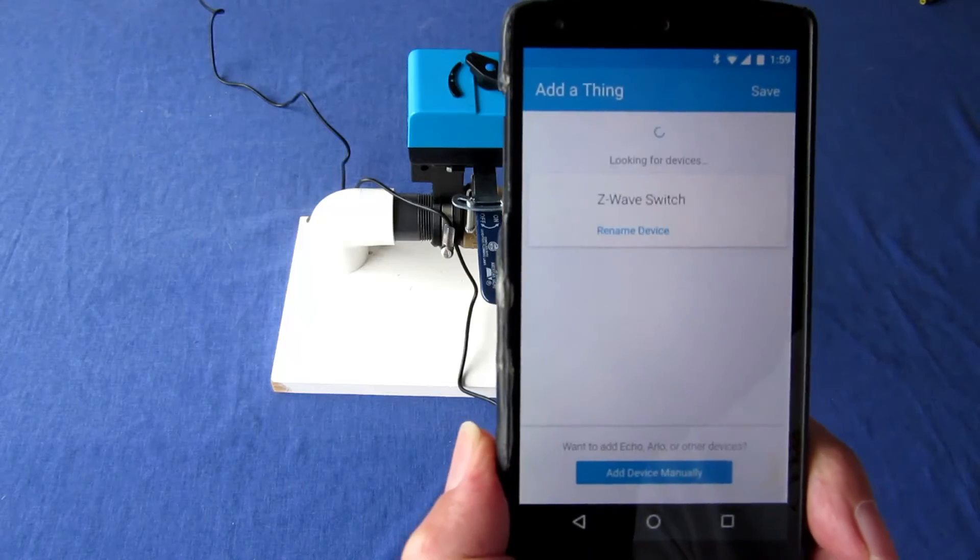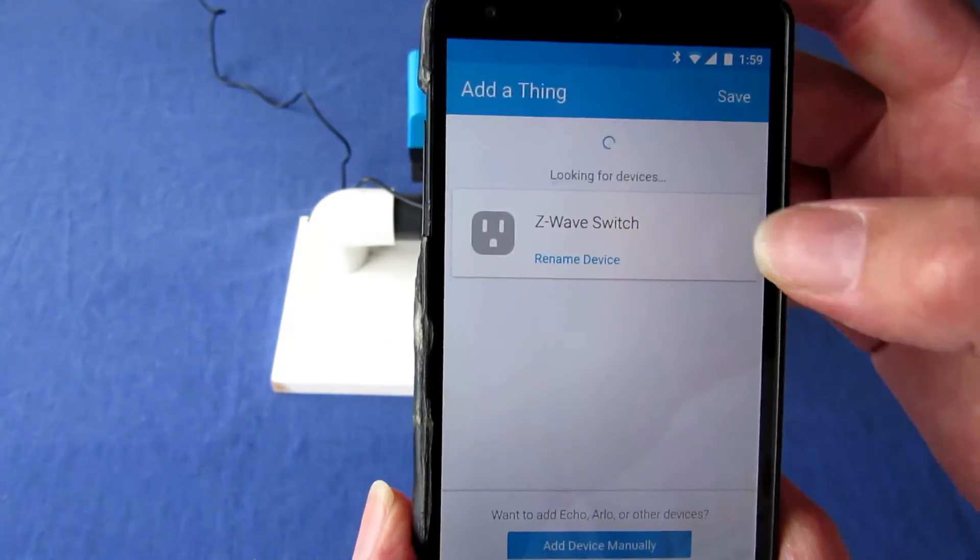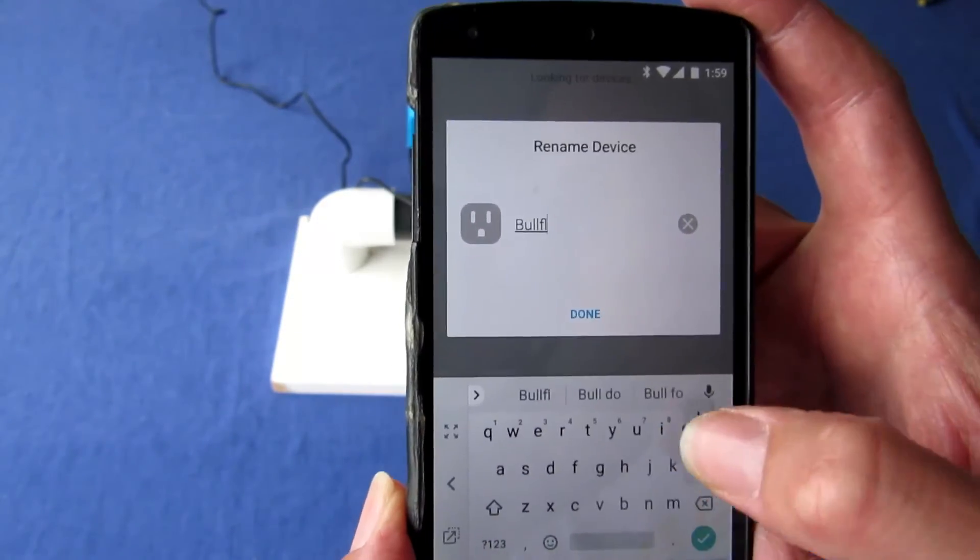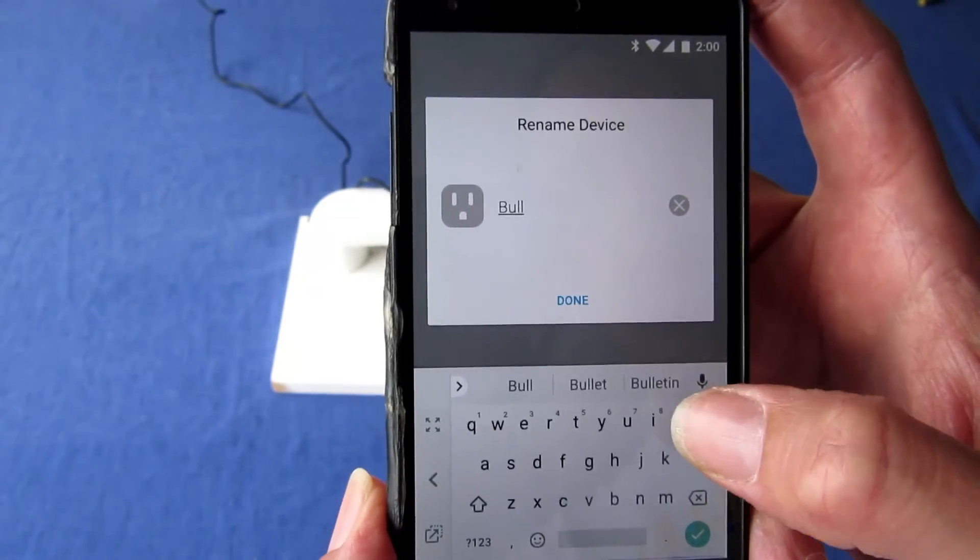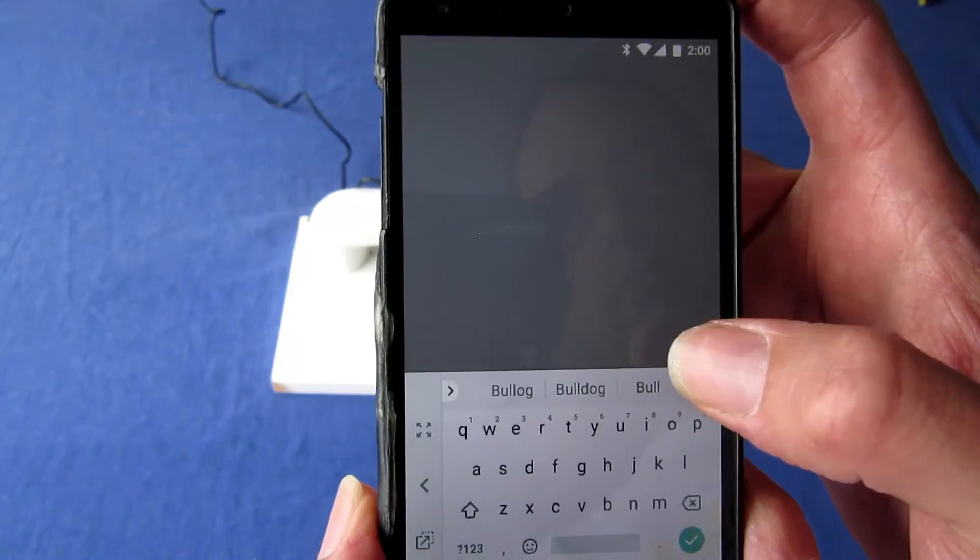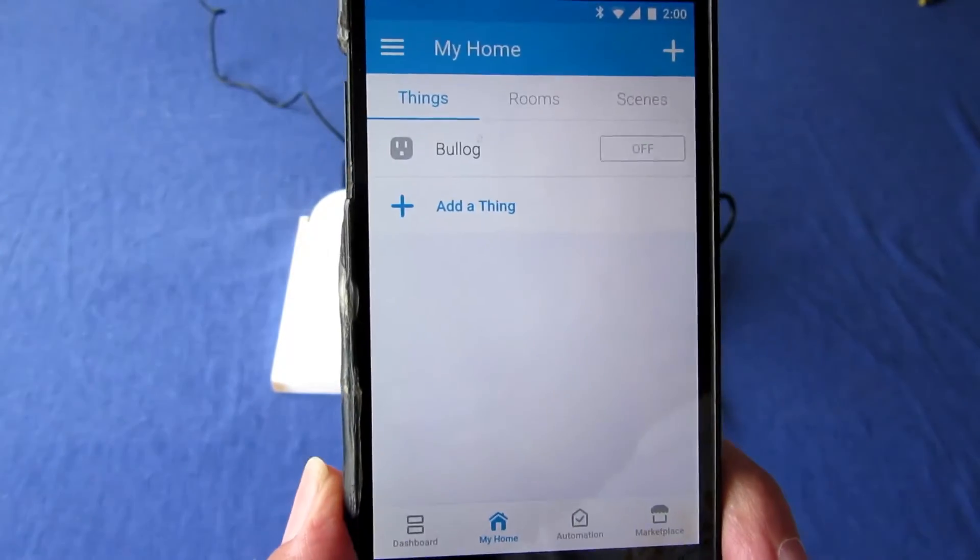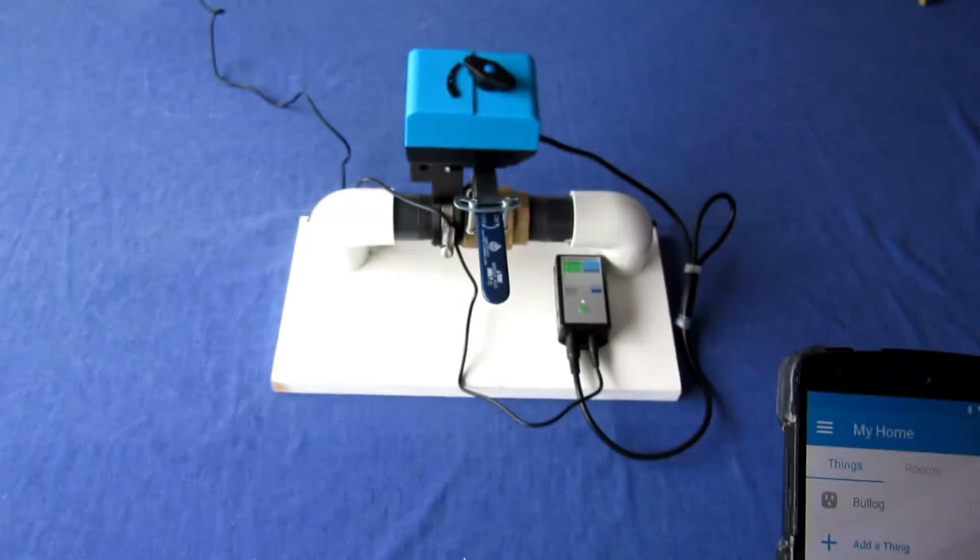The Bulldog should pair as a Z-Wave switch. Tap on the device name to change it. Test the Bulldog by pressing the button on the app to turn the water on.